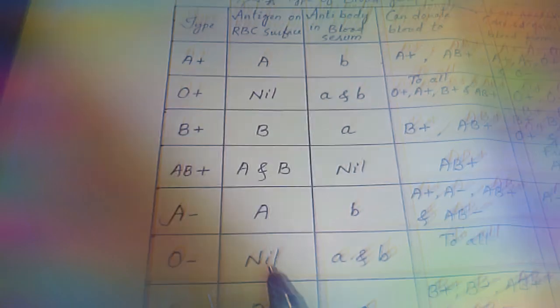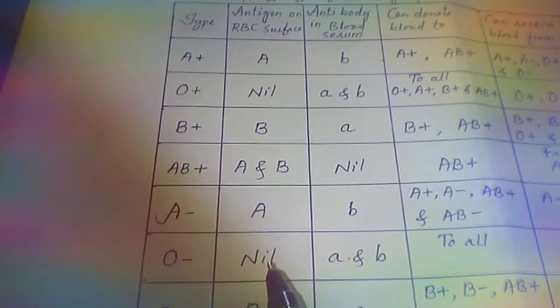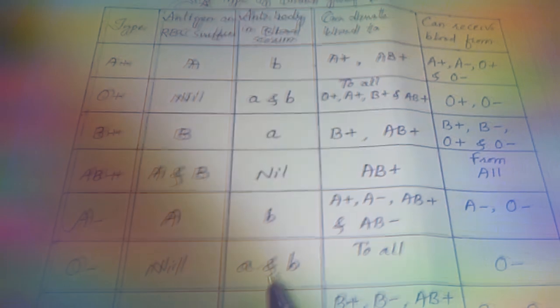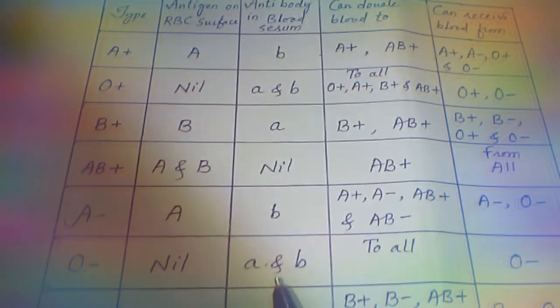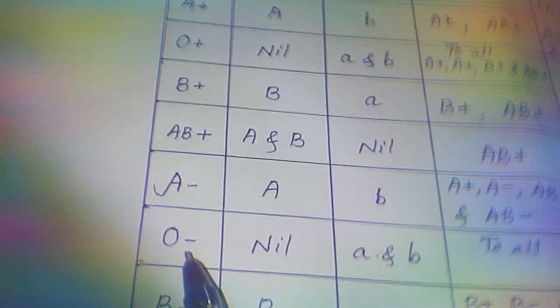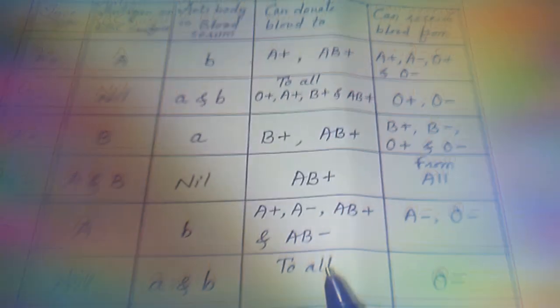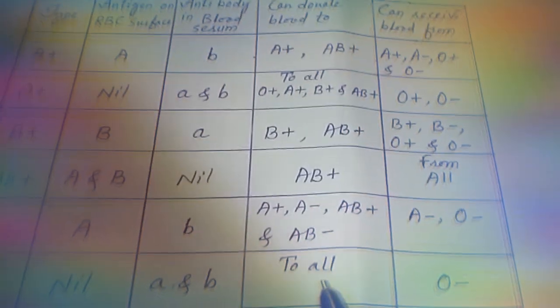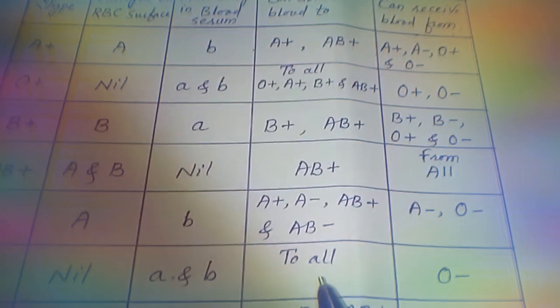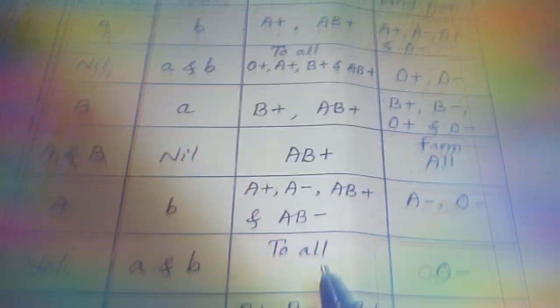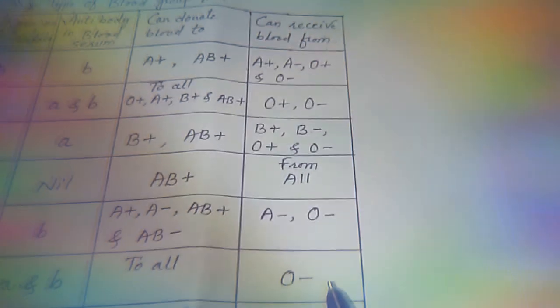O negative is a rare blood group. There is no antigen on the RBC surface, but both antibody A and antibody B are present. The negative sign shows the absence of the Rh factor. An O negative person can donate blood to persons of all blood group types, making it a universal donor, but can only receive blood from O negative persons.